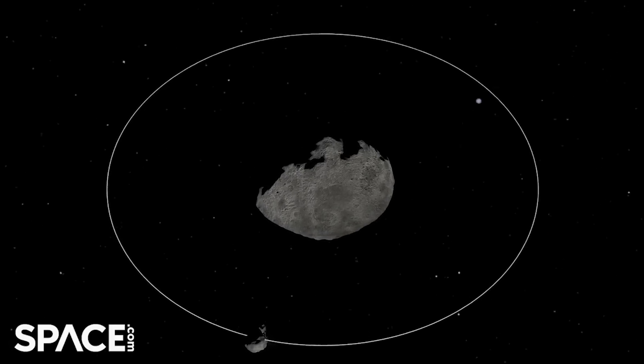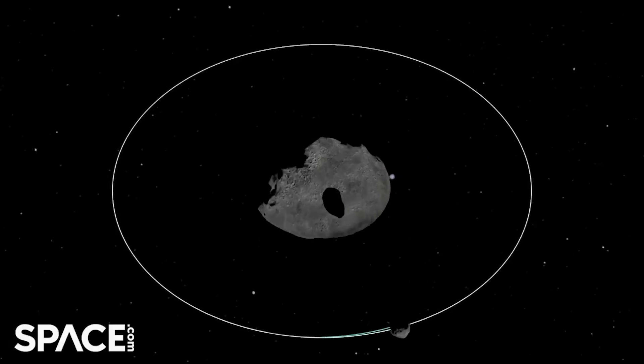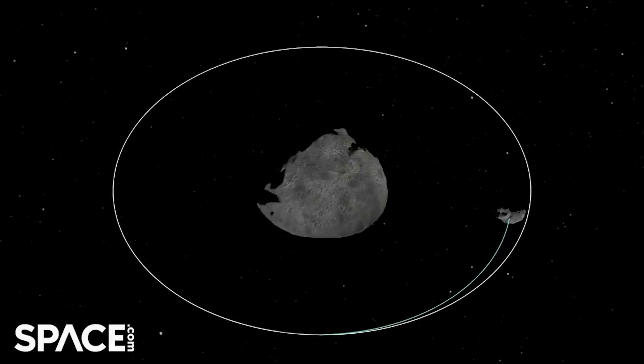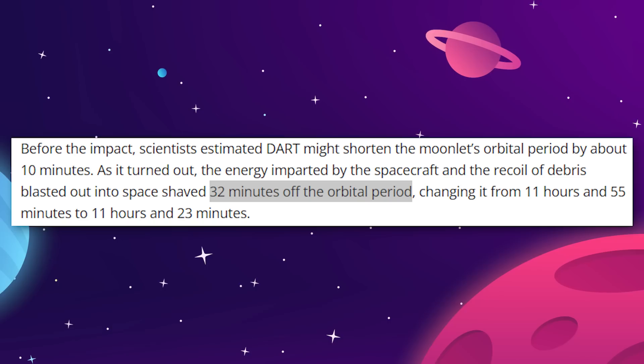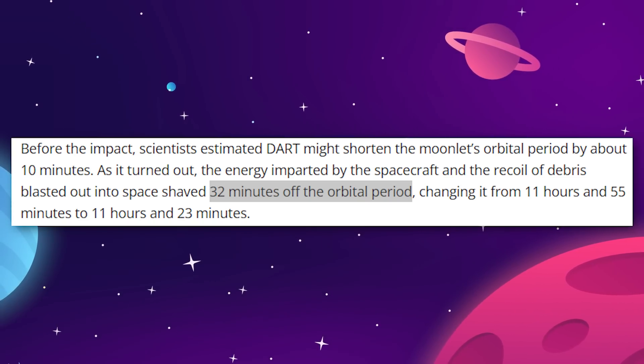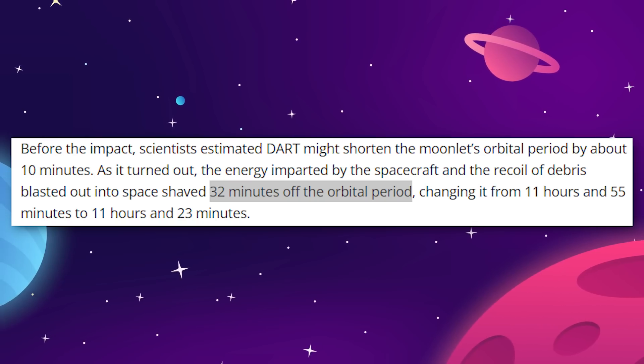NASA had predicted that at this mass, DART should be able to lower the orbital period, the time Dimorphos takes to orbit its partner, by about 10 minutes. The results show that the little satellite managed to scrape about 32 minutes off of that time, bringing the two asteroids closer together.